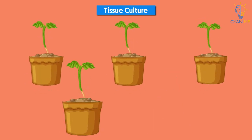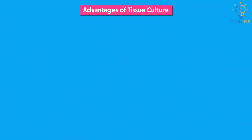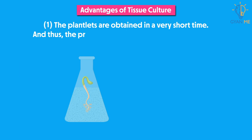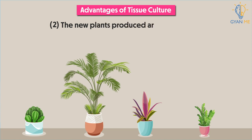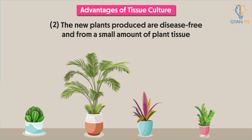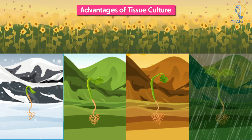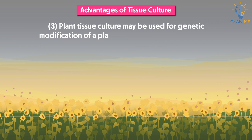Now, let's think about the advantages of this method. The plantlets are obtained in very short time, and thus the production of new varieties can speed up. The new plants produced are disease-free and grown from a small amount of plant tissue. These plants can be grown throughout the year, irrespective of the season. Last but not the least, plant tissue culture may be used for genetic modification of plants or simply to increase their yield.